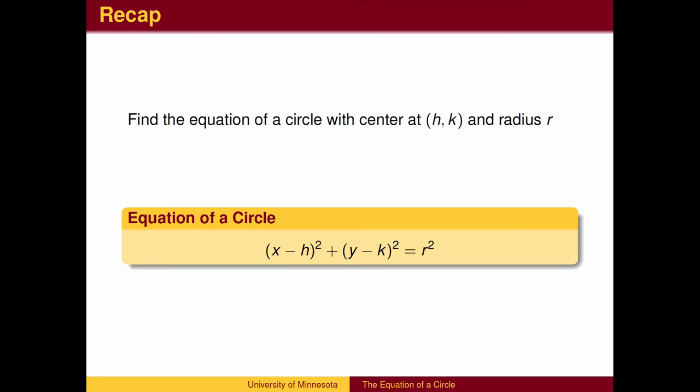To recap, to write the equation of a circle with center at h, k, and radius r, find the x-distance and y-distance by subtracting coordinates. The Pythagorean Theorem gives the equation of a circle.